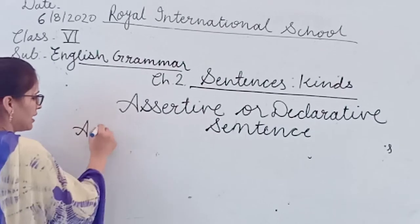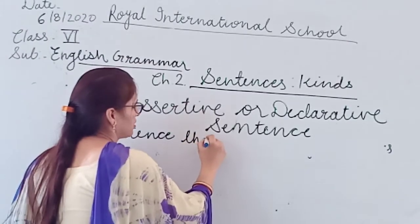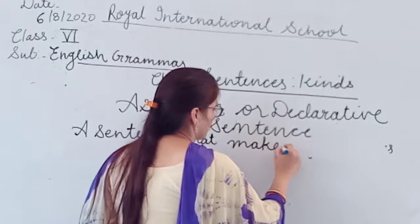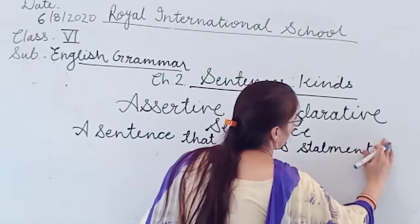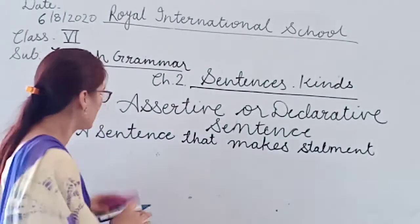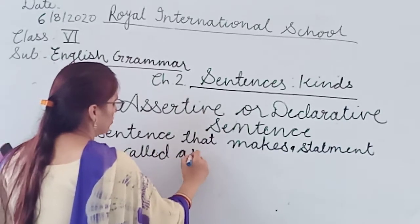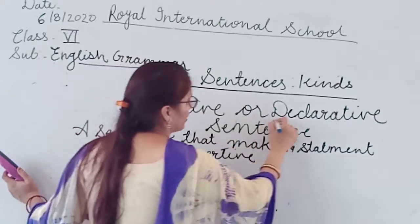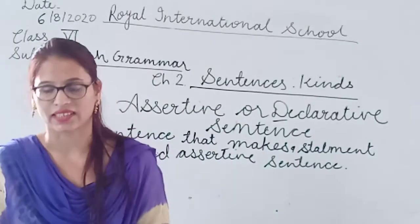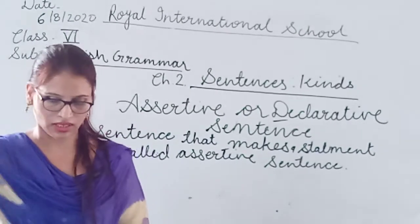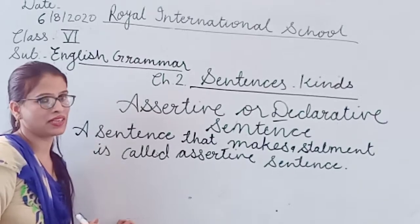So we write the definition: a sentence that makes a statement is called an assertive or declarative sentence. These sentences state facts. At the end of such a sentence, a full stop comes - no question mark will come, and there will be no exclamation sign.